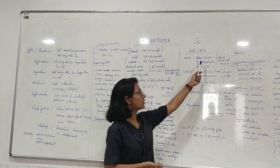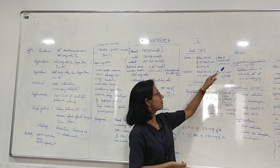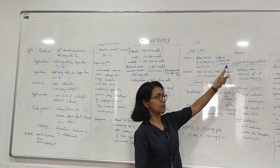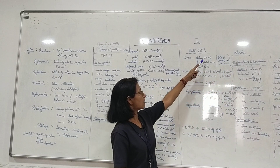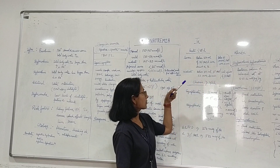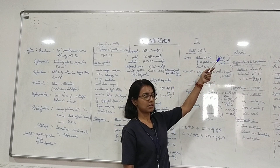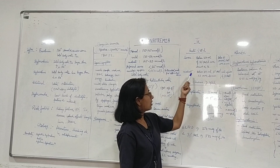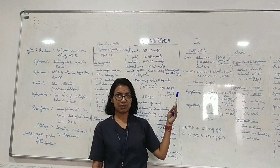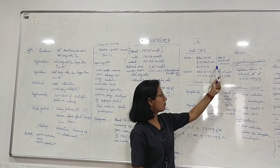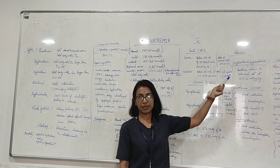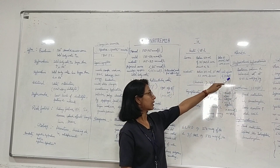According to the American guideline, a bolus of three percent sodium chloride 100 ml is given over 10 minutes. The difference from the European guideline is 150 ml over 20 minutes versus 100 ml over 10 minutes. For moderate symptoms, the European guideline recommends a bolus of 150 ml of three percent sodium chloride once over 20 minutes, while the American guideline recommends a continuous three percent sodium chloride infusion.